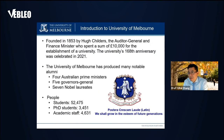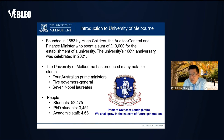The University of Melbourne was founded in 1853, and this year we are celebrating our 168th anniversary. We have many distinguished alumni, including four Australian Prime Ministers, five Governors General, and seven Nobel Prize winners.